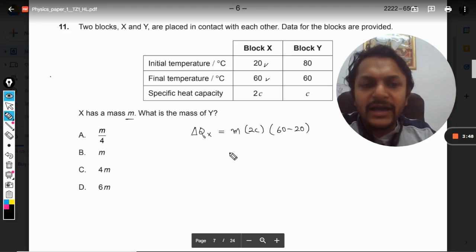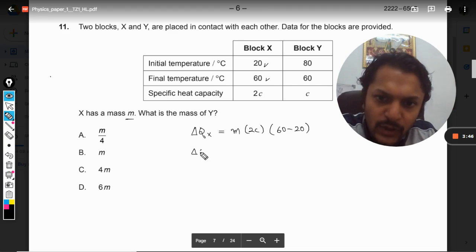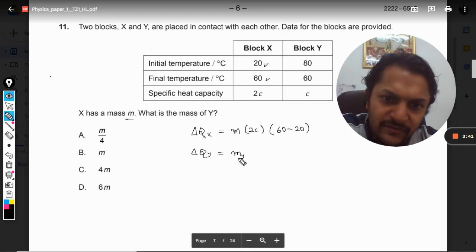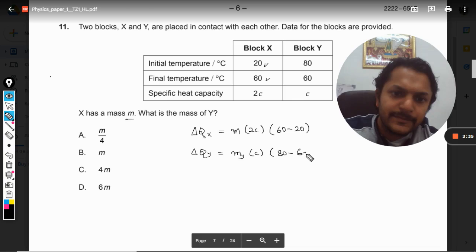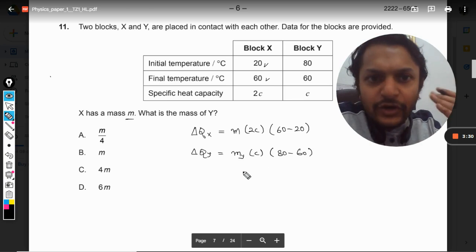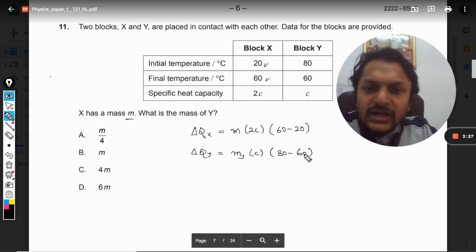And what is the heat lost by body Y? So that will be equal to the mass Y into this specific heat which is C, and again the difference of the temperature, that is 80 minus 60. So this is the fall in temperature for the block Y.